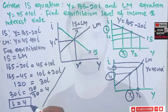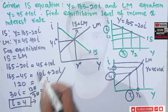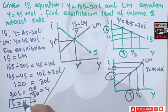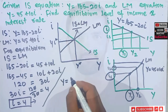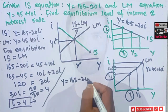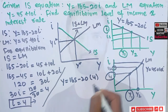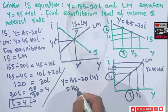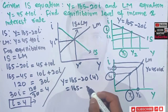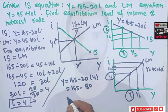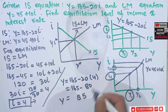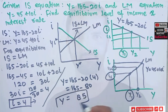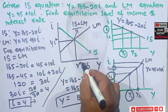To find the equilibrium level of output, we plug I = 4 into the IS equation: Y = 165 − 20 × 4 = 165 − 80 = 85. So the equilibrium level of income is 85.